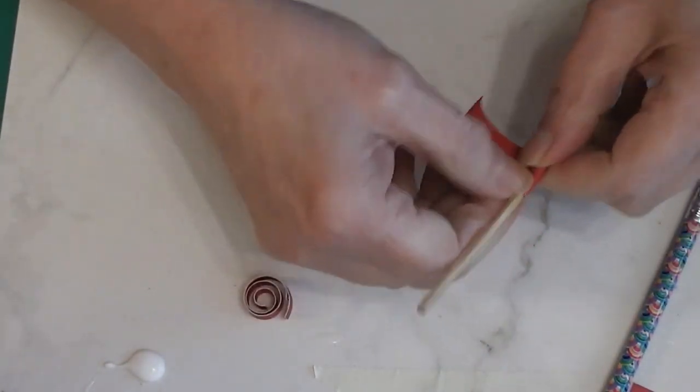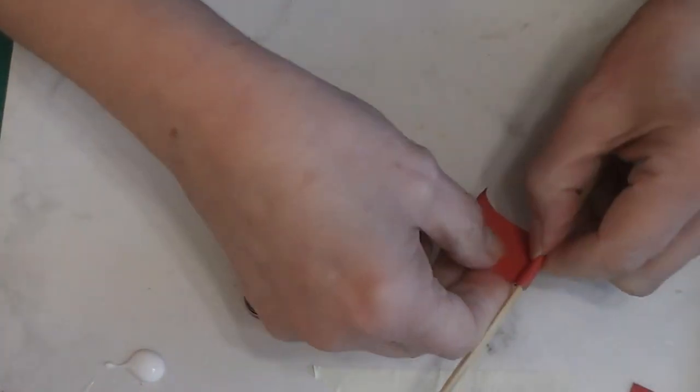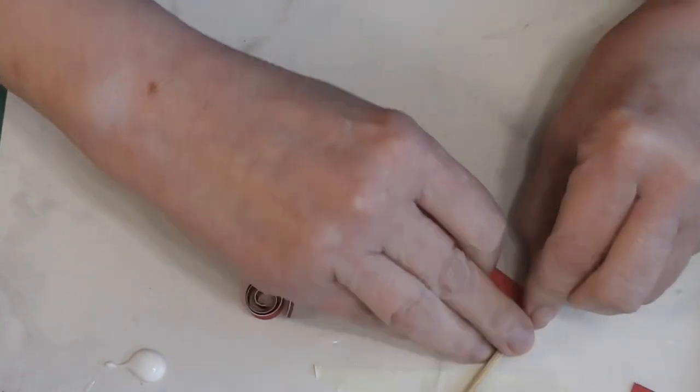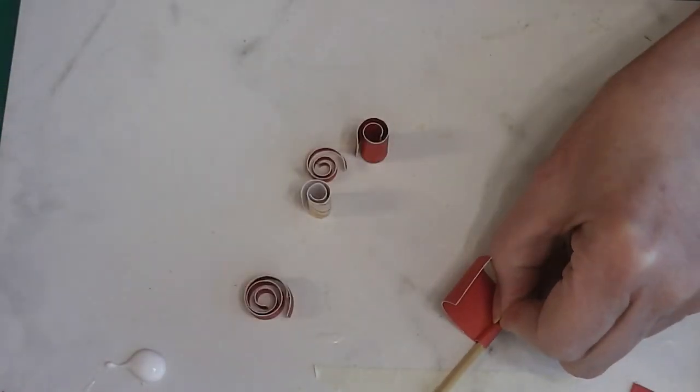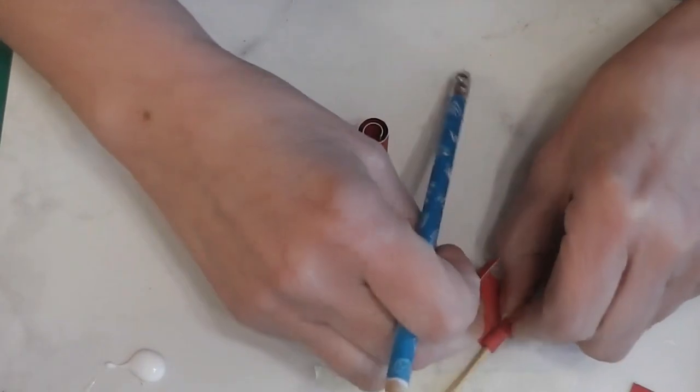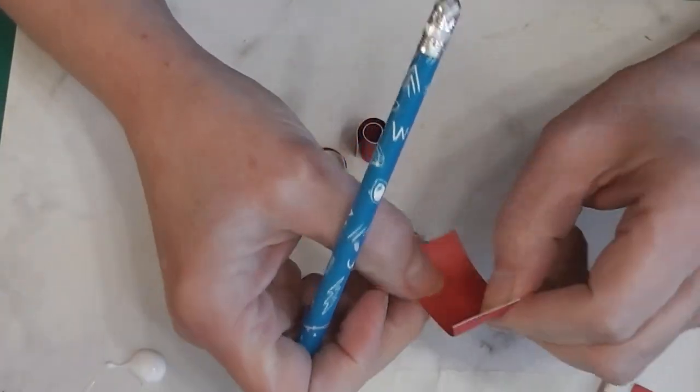Now I also have an extra pencil here because, and it's important that the one you're forming on is not sharpened, because we are going to need that flat point, that flat end later. I'm going to mark where this comes, because this area I don't want any glue in.